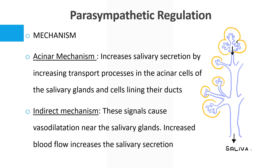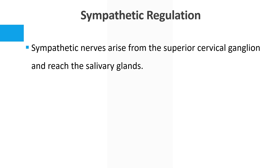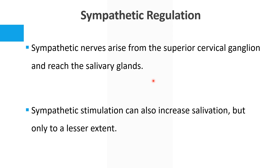Next we move on to sympathetic regulation. The sympathetic system has a much smaller role compared to the parasympathetic system. Notably, the sympathetic system also increases salivary secretion, even though to a lesser extent. Usually we say that parasympathetic and sympathetic systems act in opposite ways, but in the case of salivary secretion both tend to increase salivation. Sympathetic nerve fibers arise from the superior cervical ganglion and reach the salivary glands, increasing salivation but to a lesser extent.